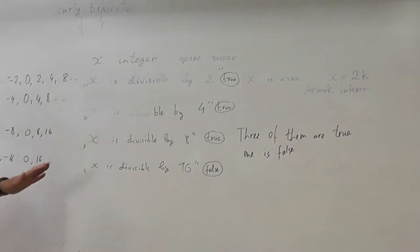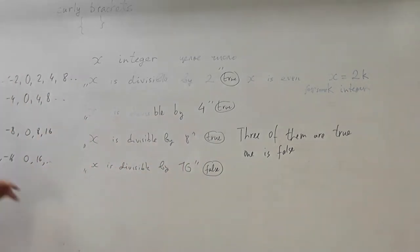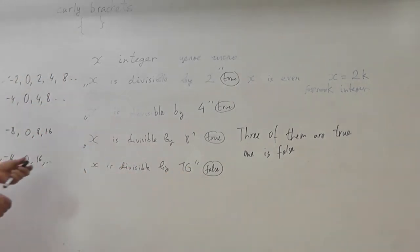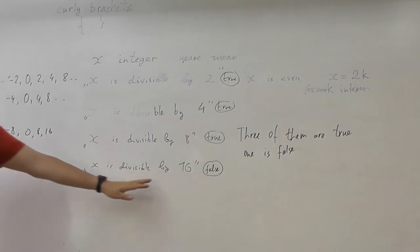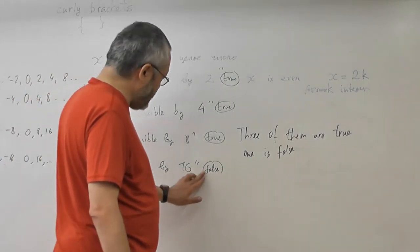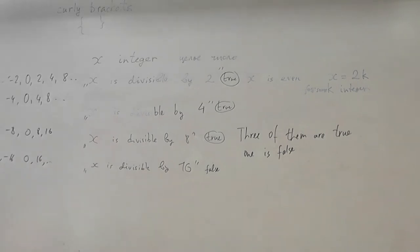But the reverse statement is not true. It's possible that the number is divisible by eight, but not divisible by sixteen. And therefore, if one statement is false, it's the last one. If only one statement is false, it's the last statement. Because if this is true, then all others are true. Therefore, the case when the last one is true doesn't work. And since we know that one is false, then the last one is false. We know that only one is false. All the rest are true. And indeed, for example, this number is eight.